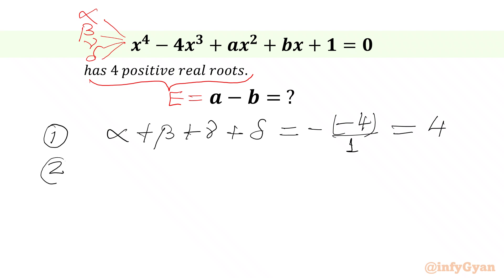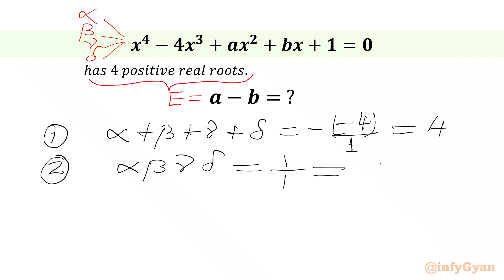The second equation is the product of roots. So alpha times beta times gamma times delta equals the constant over the coefficient of x⁴, which is 1 over 1, so the value equals 1. We now have sum of roots equal to 4 and product of roots equal to 1.